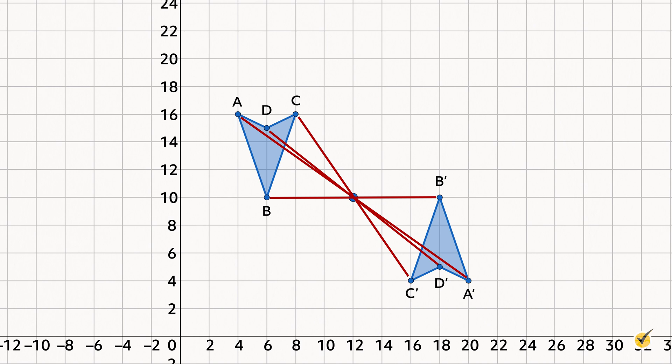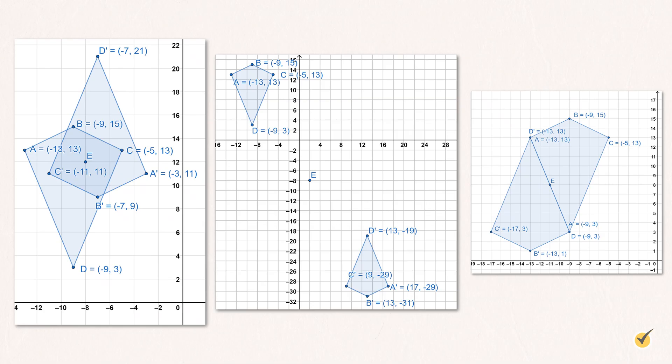Sounds just like reflection over a line, right? Here is a kite being reflected over several different points. The point of reflection can be on the edge, or even inside, the figure. Notice how our properties still hold true.